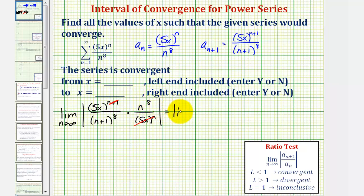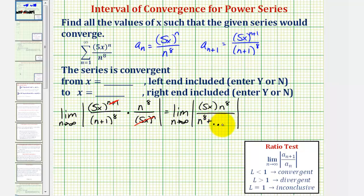So now we have the limit as n approaches infinity of the absolute value of five x times n to the eighth. Looking at the denominator, if we were to multiply it out, the first term would be n to the eighth plus several more terms. When finding this limit as n approaches infinity, we only care about the highest degree term for n. The degrees are the same, so the n part approaches the ratio of the leading coefficients, which is one over one. Since five x is not affected by n, this limit is equal to the absolute value of five x.